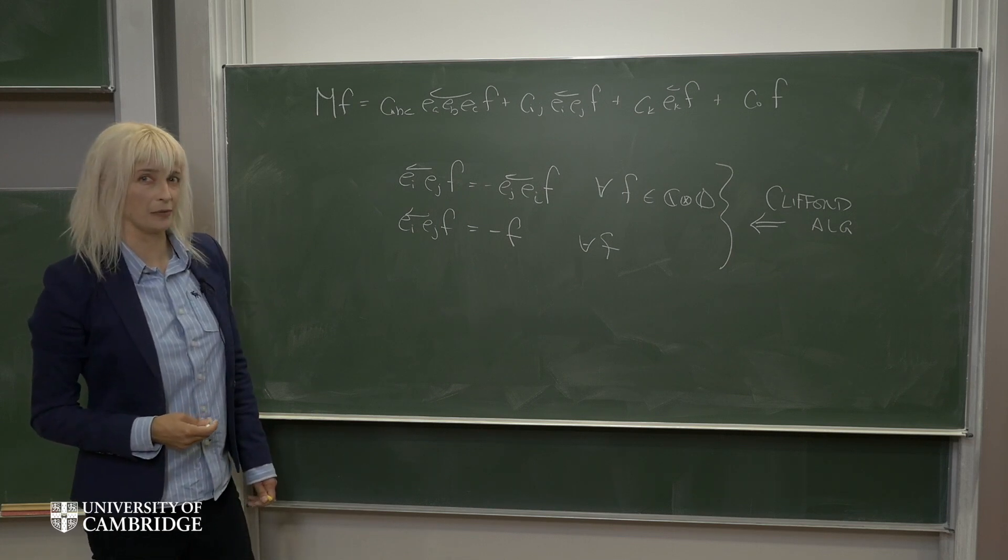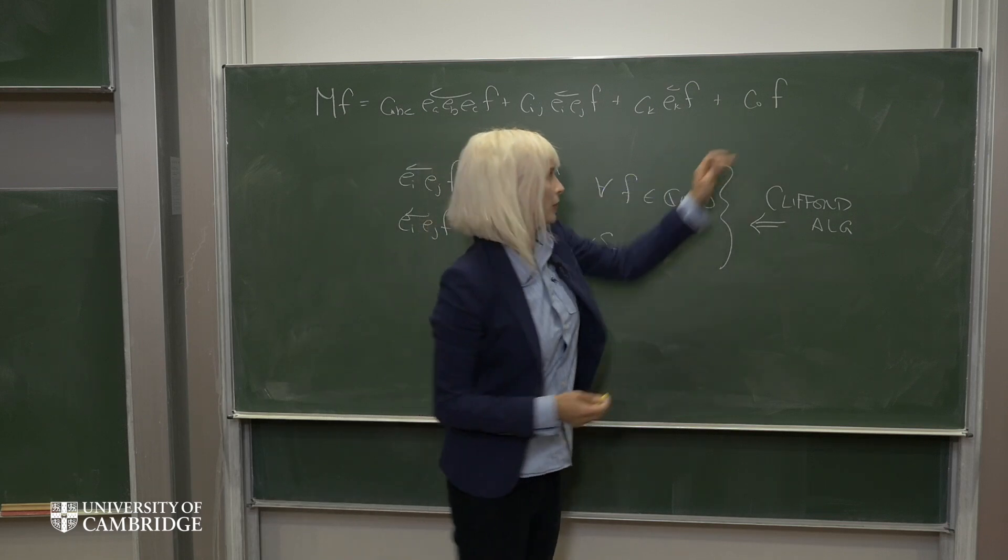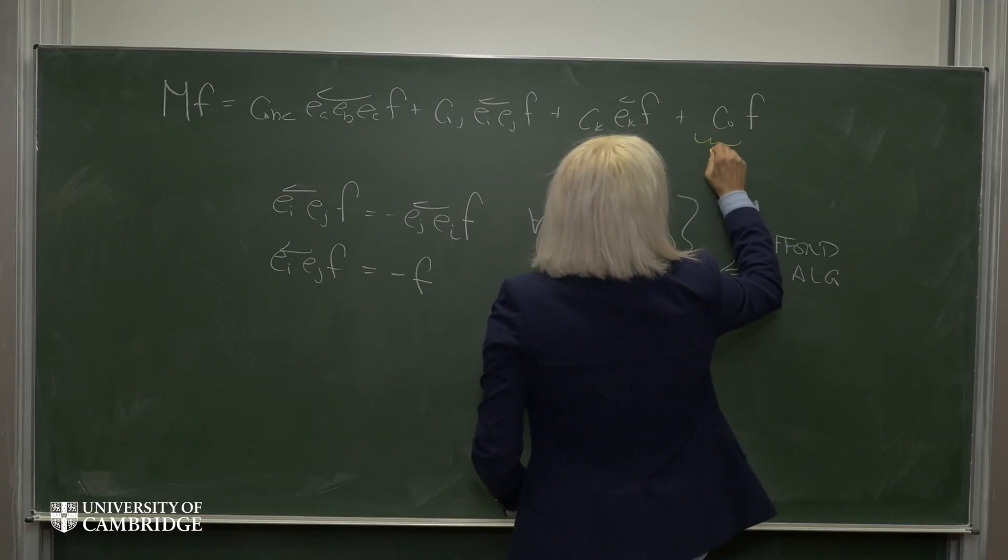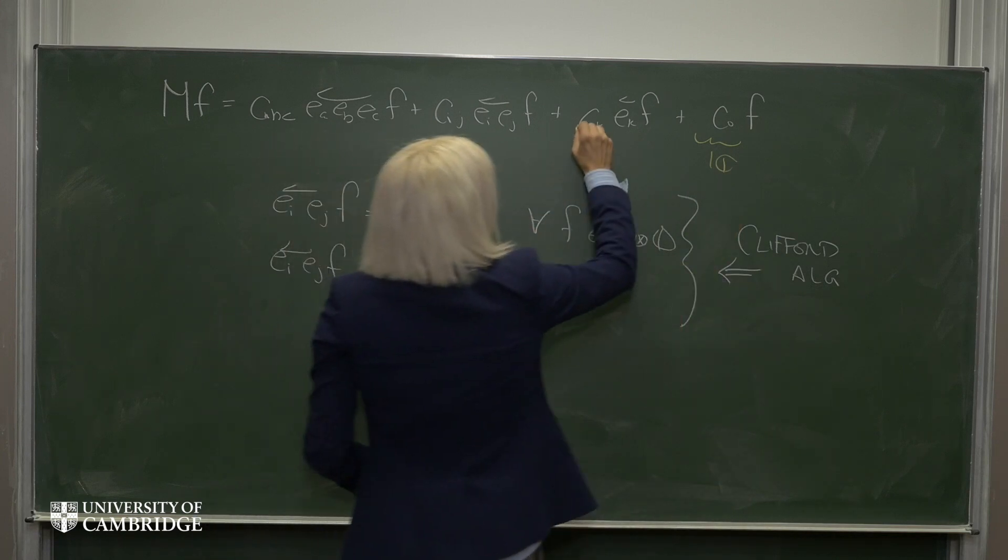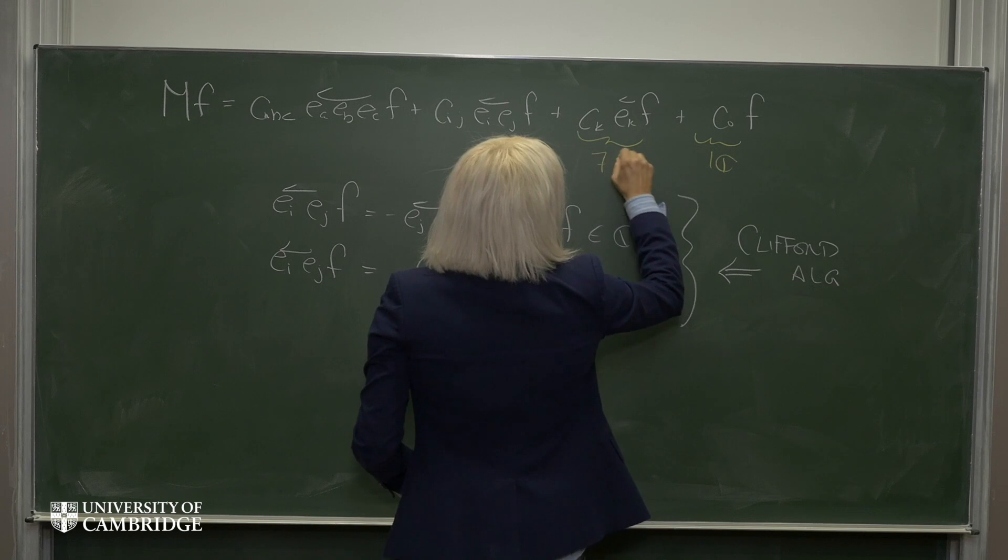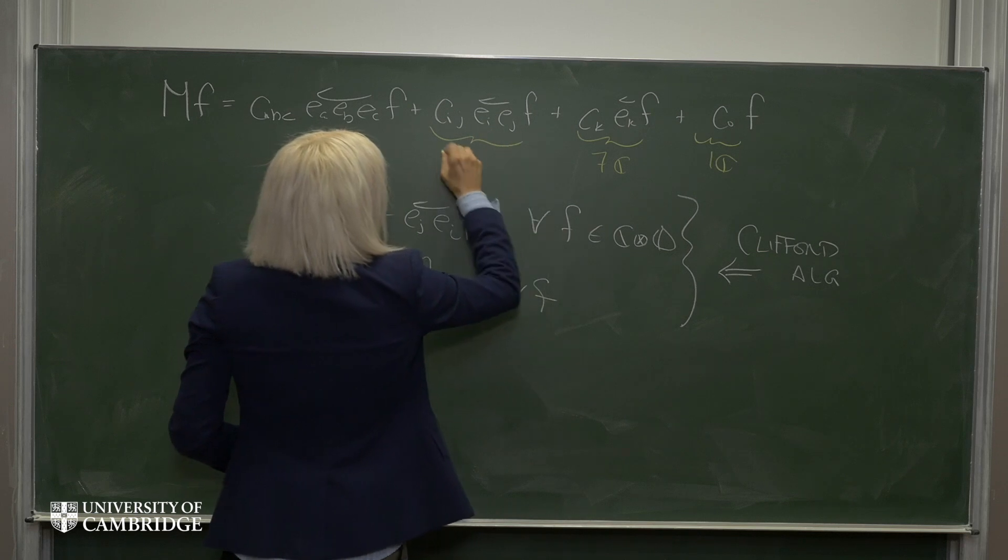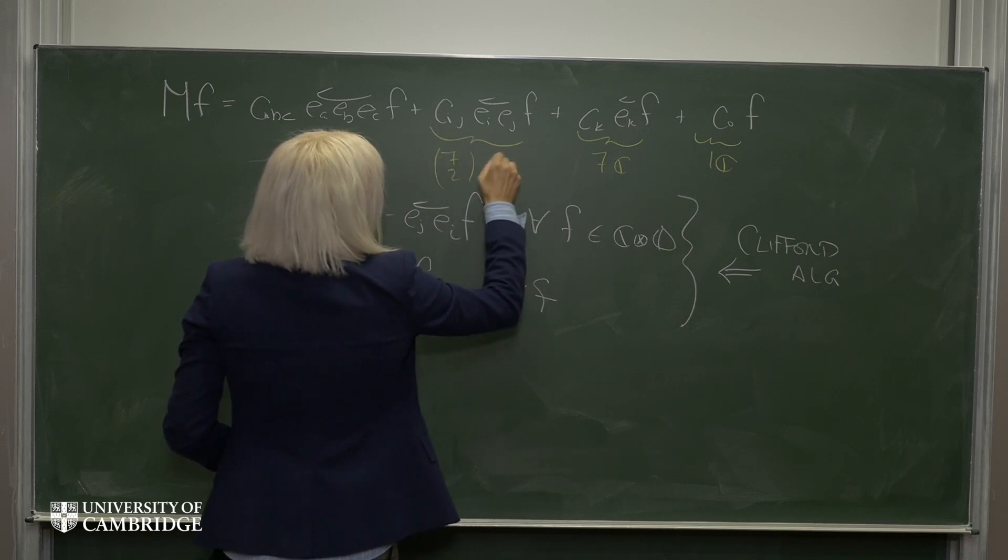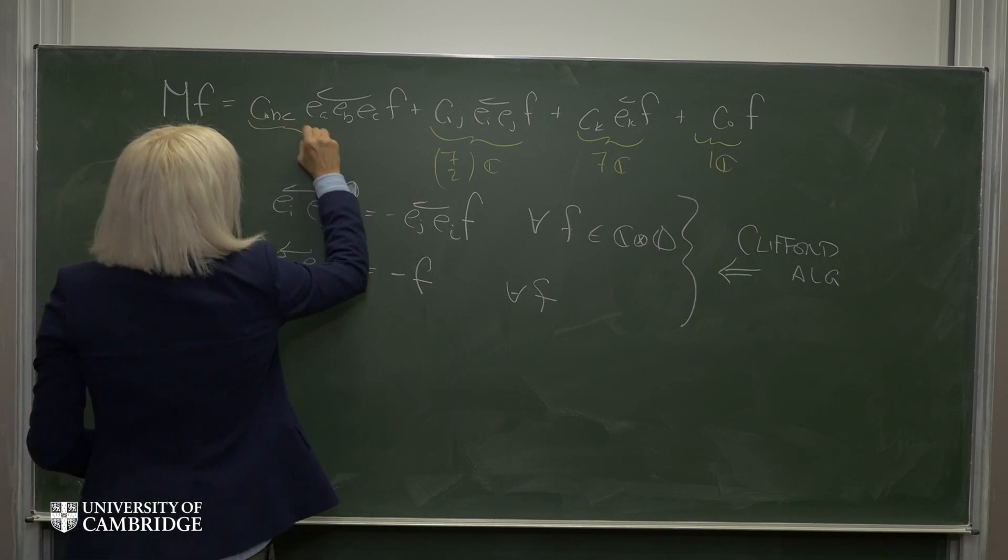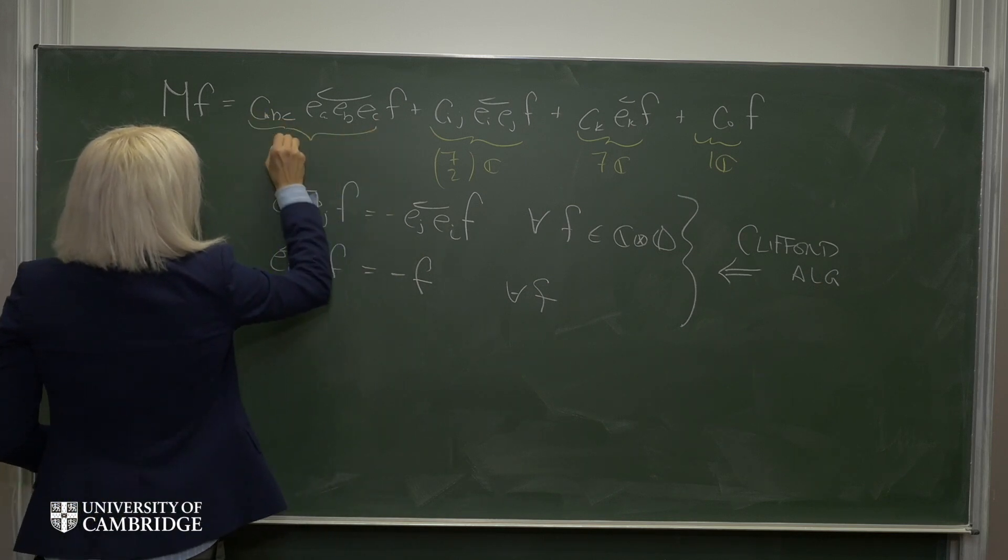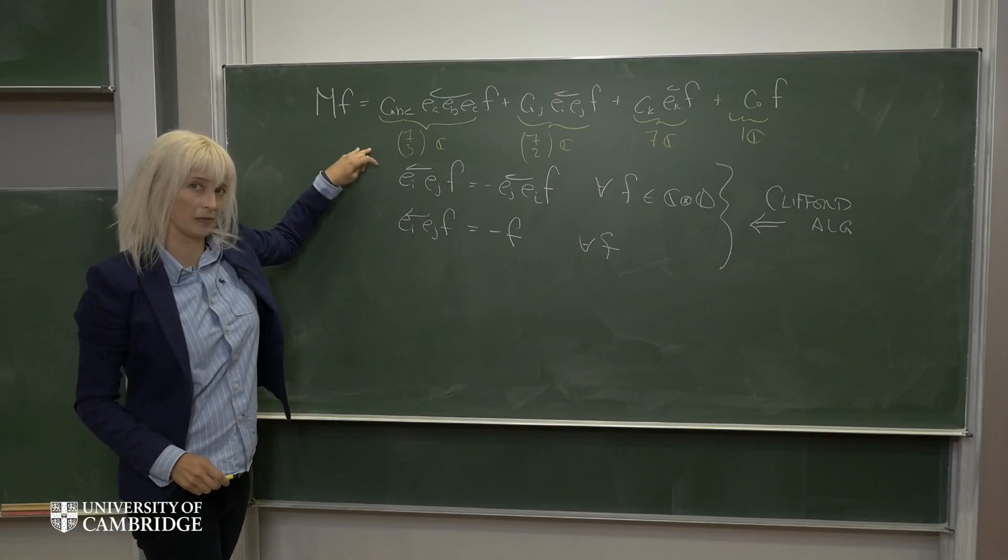Now if we count up all the degrees of freedom of this space of chains, we find that here we've got one complex degree of freedom. Here there are seven complex degrees of freedom. Here there are seven choose two. And here there are seven choose three. So when you add all of these up, we have 64 complex degrees of freedom in total.